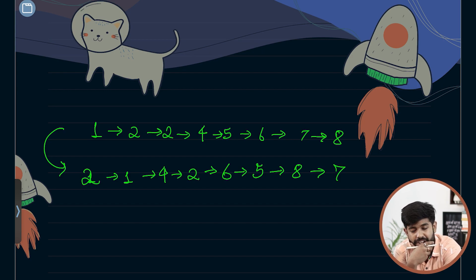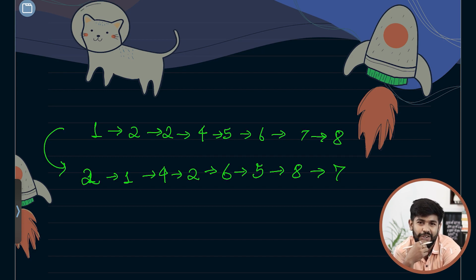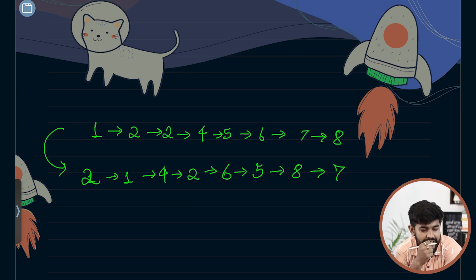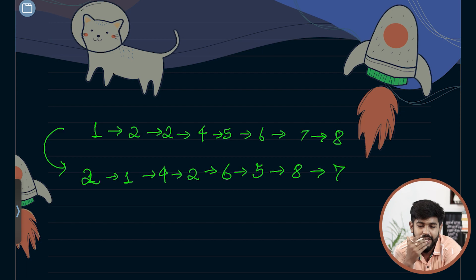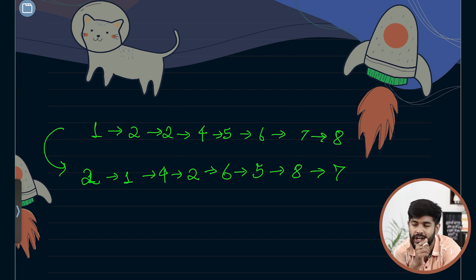The very first scenario we could consider is simply swapping the data, not the nodes. But this won't work, because the problem setters have said you need to swap the nodes, not only the data. If only data is swapped, the driver will print minus 1 — they have implemented something in the backend. So we need to do the hard work now.